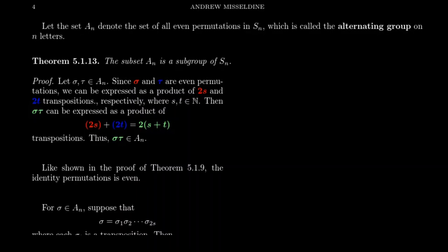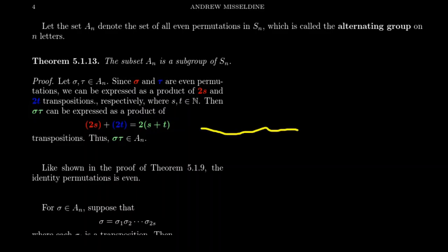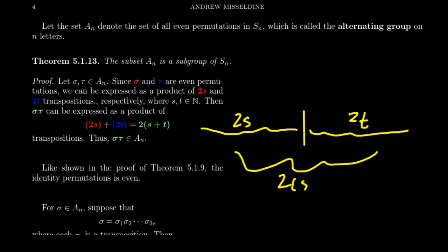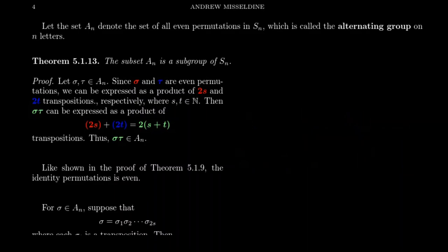Imagine we have two even permutations, sigma and tau. Sigma can be factored as a product of 2s transpositions, and tau can be factored as a product of 2t transpositions. When we consider the product sigma times tau, sigma gives us 2s transpositions and tau gives us 2t transpositions. Putting all of those together, you get 2(s + t) transpositions. So the product is an even permutation. Therefore, the alternating group is closed under multiplication.